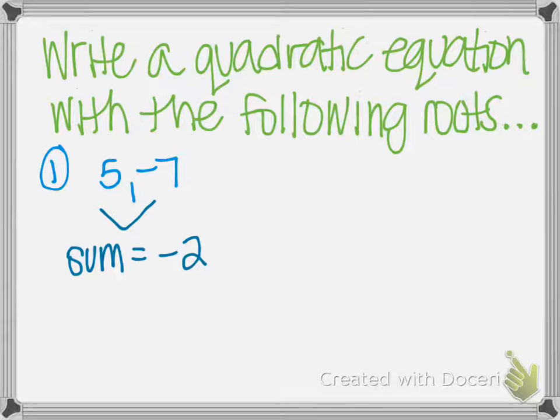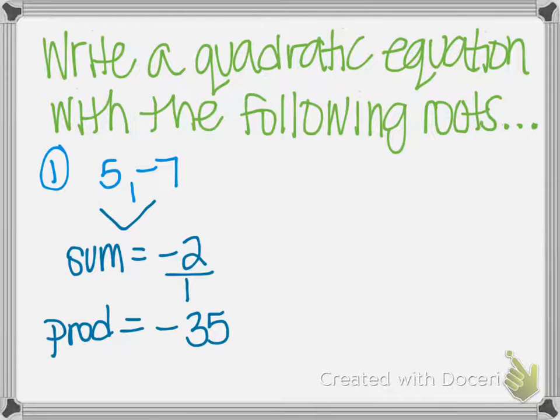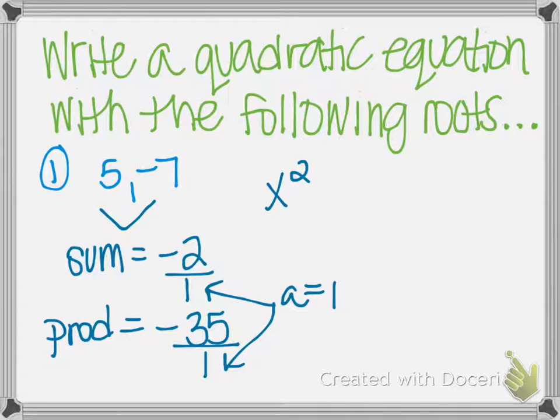Well, negative 2, if we really want to look at that as a fraction, can just be written over 1. My product, if I multiply 5 and negative 7, I get negative 35. Again, if you really want to look at this as a fraction, I can write it over 1. That just means, because I got these two 1's, that my a value is 1, or my lead coefficient is 1.